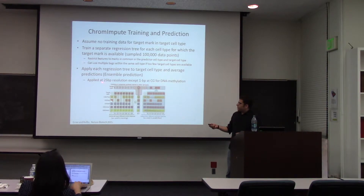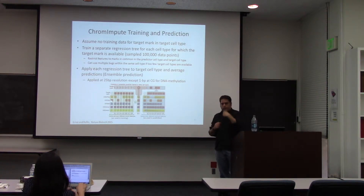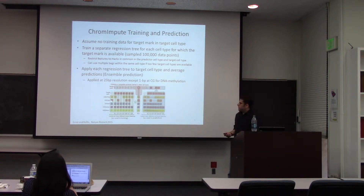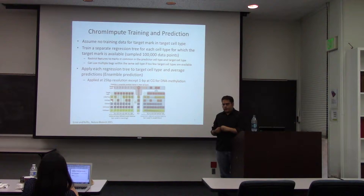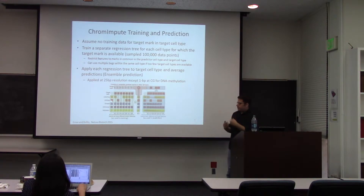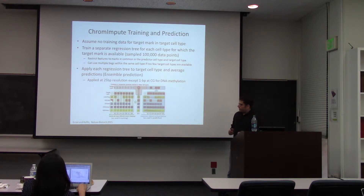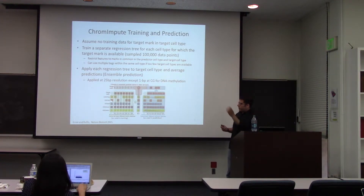Predictions were made at 25 base pair resolution, except for DNA methylation which was done at one base pair resolution but only for CG sites. RNA-seq and DNA methylation were only used as targets, not as input features for prediction, since we wanted a chromatin-based prediction and DNA methylation occurs only at irregular intervals. We also had marks with higher confidence that we only used to impute others, not the reverse.